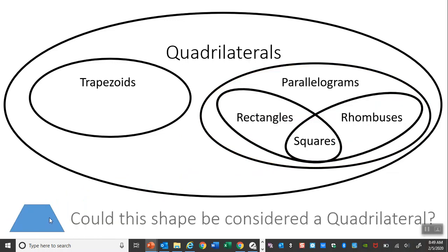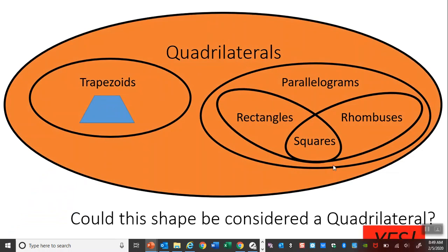This shape. Once again, we know it's a trapezoid. Could it be considered a quadrilateral? Well, here is the trapezoid. Quadrilaterals are anything in this circle. So yes, it could be considered a quadrilateral.